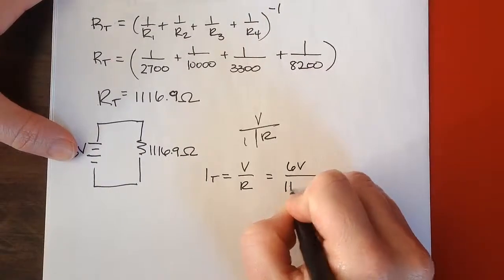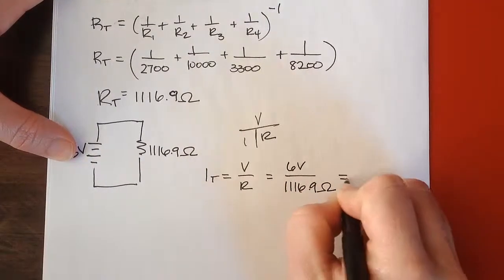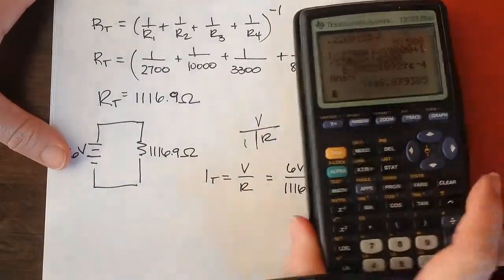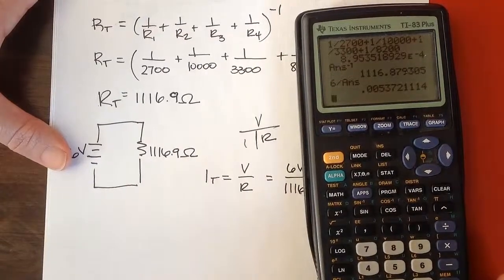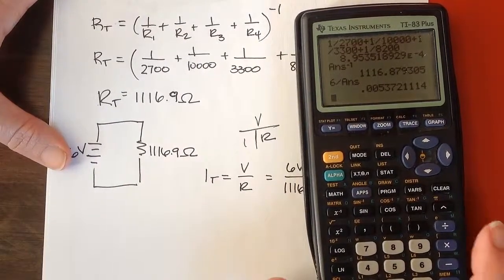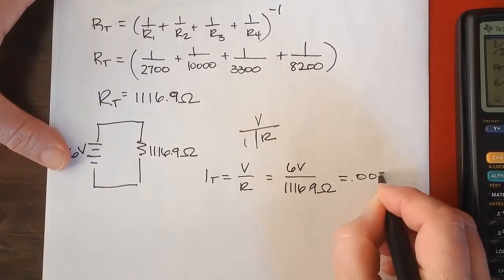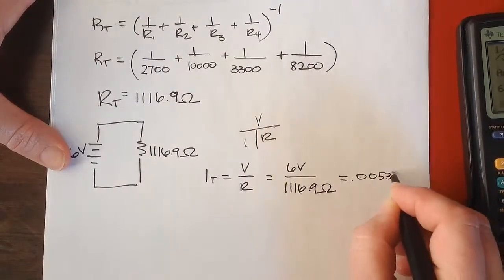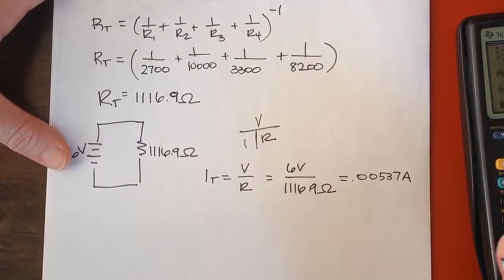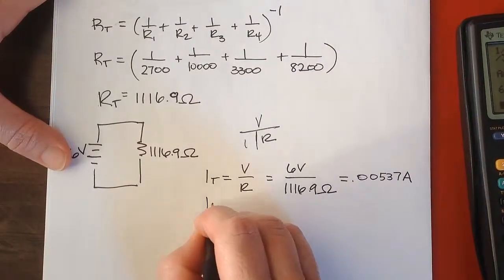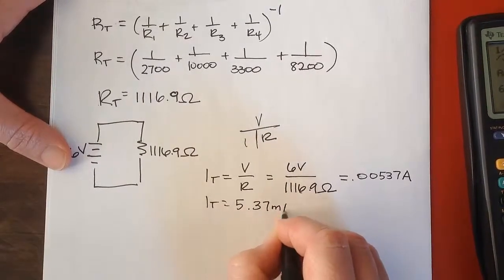The R is 1,116.9 ohms. That's going to give us 5 milliamps. I get 0.00537 amps. So IT is equal to 5.37 milliamps.